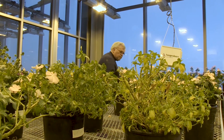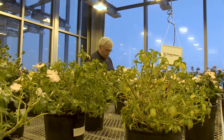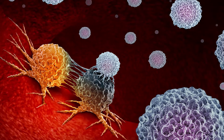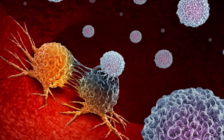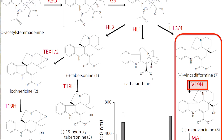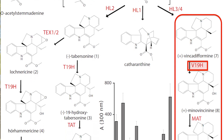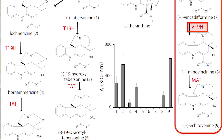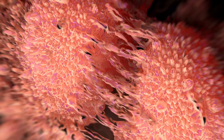When cancer cells divide they have to produce certain components that are responsible for cell division. We call these the spindle apparatus. Once division is taking place you have to have the duplicated chromosomes that have to be separated from one another. And so these chemicals actually bind to the spindle apparatus and interfere with the separation of these cells.